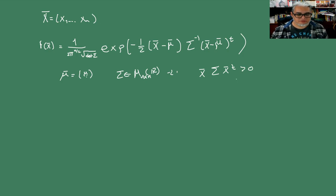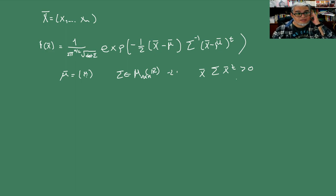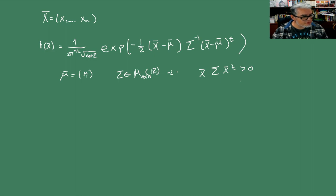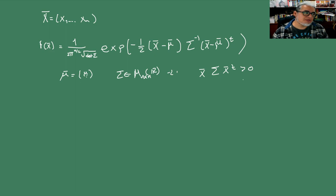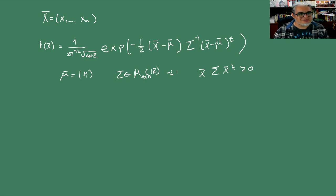Vamos a dejar aquí por hoy. La próxima semana vamos a ver esperanza condicional, y la siguiente semana una introducción a procesos estocásticos: vamos a ver martingalas, filtraciones, procesos brownianos, procesos de Poisson, y cadenas de Markov. Eso lo vamos viendo en las siguientes sesiones. Por hoy dejémosle aquí y nos vemos en la siguiente sesión.